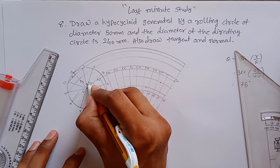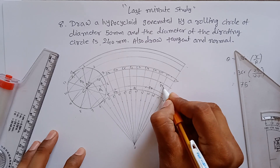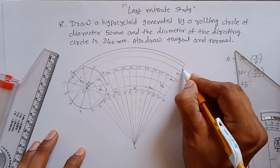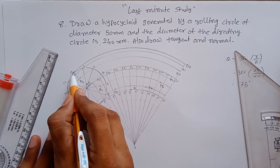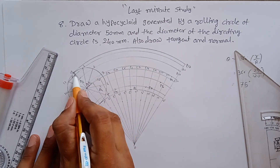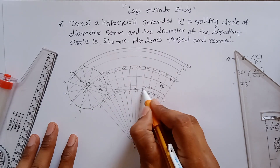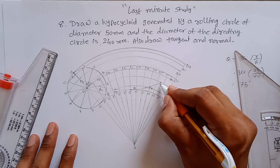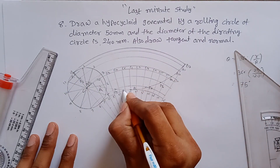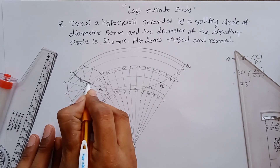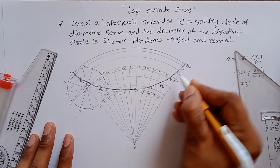Continue through C10, C11, and C12. Your curve points are P1, P2, P3, P4, P5, P6, P7, P8, P9, P10, P11, and P12. Join all the points with a smooth curve and make it dark.